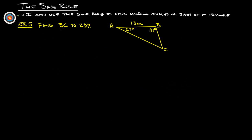So, let's use that to do example five. Find BC, this side here, to two decimal places. So, we have two angles and one side, and we're trying to figure out what this right here is, BC.